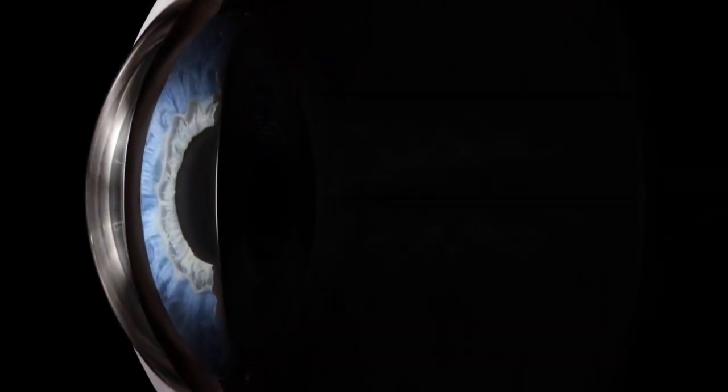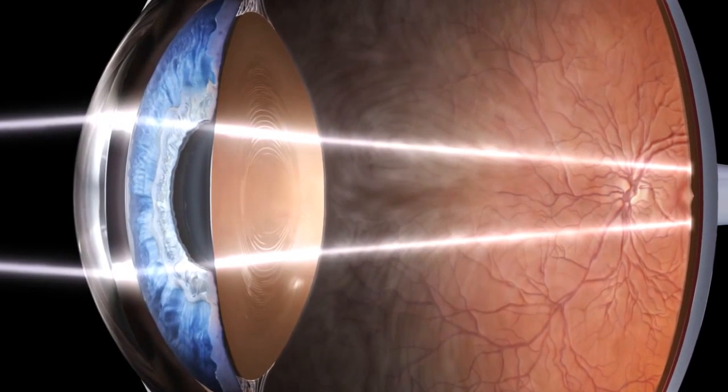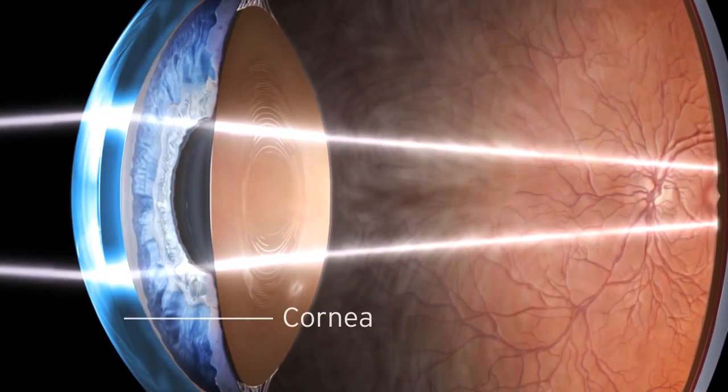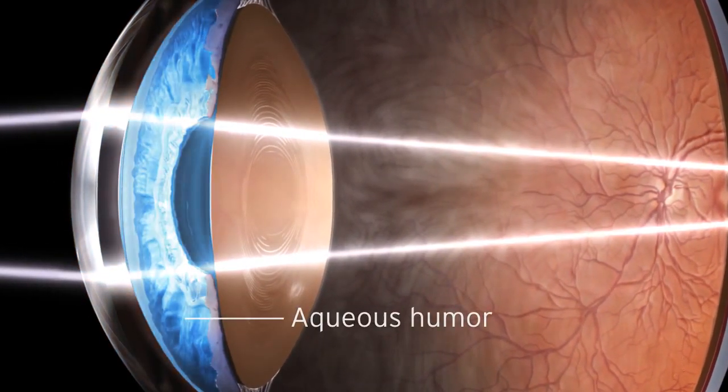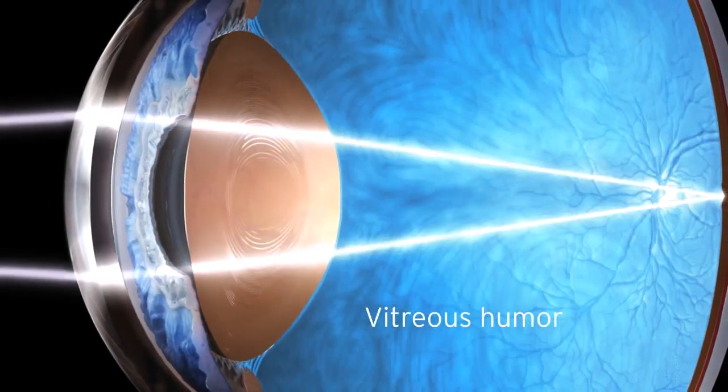The reflected light of the world enters through the crystal transparency of the cornea, aqueous humor, lens, and vitreous humor.